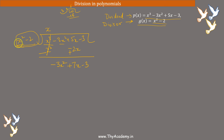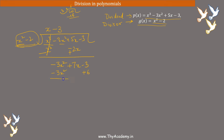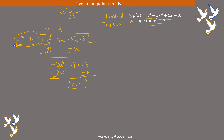Now, same thing — we look at the highest power. We have x² and -3x². When we subtract -3x² minus (-3), that gives -3x² and -2 into (-3) gives +6. Now we change the sign and subtract: -3x² + 3x² cancels, leaving 7x minus 3 minus 9.